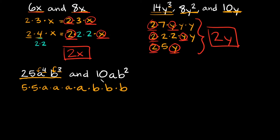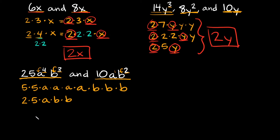Now for 10ab²: the number 10 breaks down into 2 times 5, and both are prime. We have just a single a — basically a to the 1st power. Then b squared means 2 b's: b times b. So we've multiplied everything out.